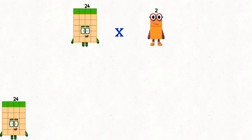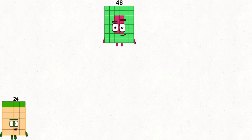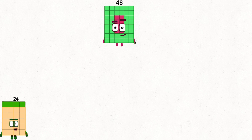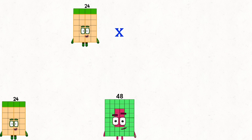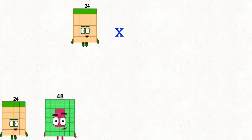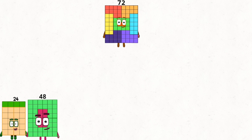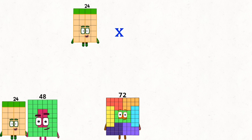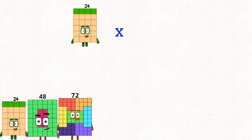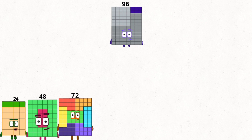24 times 2 equals 48. 24 times 3 equals 72. 24 times 4 equals 96.